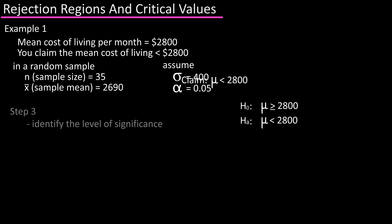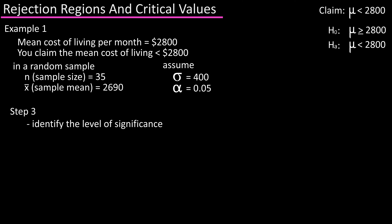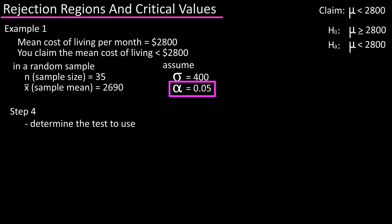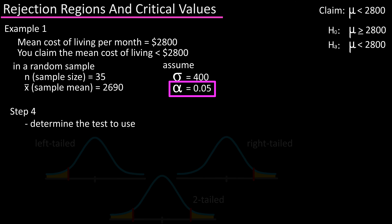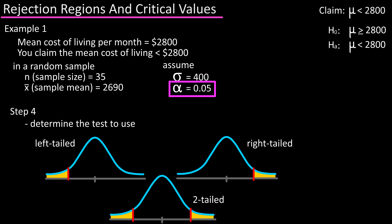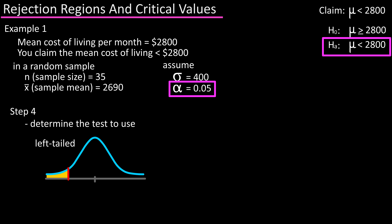Step three: identify the level of significance, which was given as alpha equals 0.05. Step four: determine the test to use — left-tailed, right-tailed, or two-tailed. Because the alternative hypothesis contains the less-than inequality, this will be a left-tailed test.